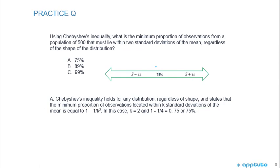Okay, this question's not too bad. There's really two ways you can do it. You can straight out kind of memorize from our graph that plus or minus two standard deviations was the 75%.